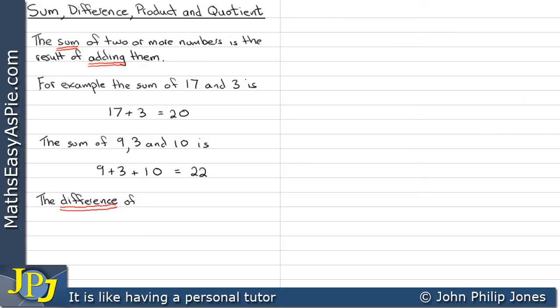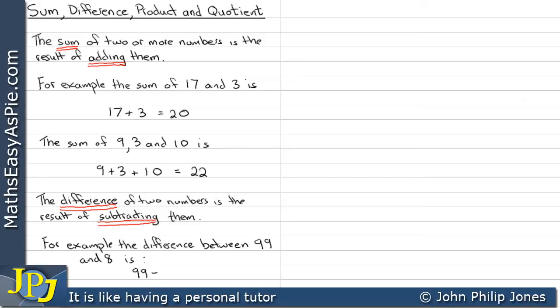The difference of two numbers is the result of subtracting them. For example, the difference between 99 and 8 is 99 minus 8, which is obviously equal to 91.